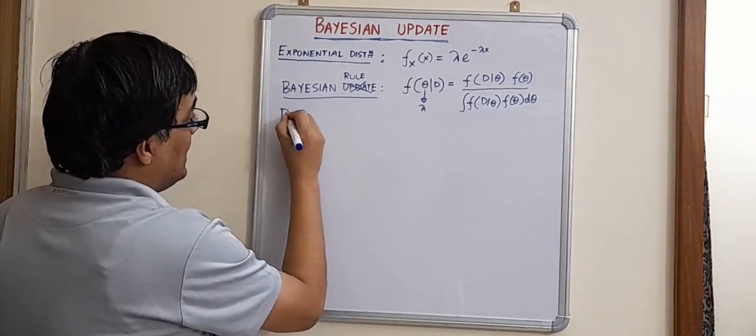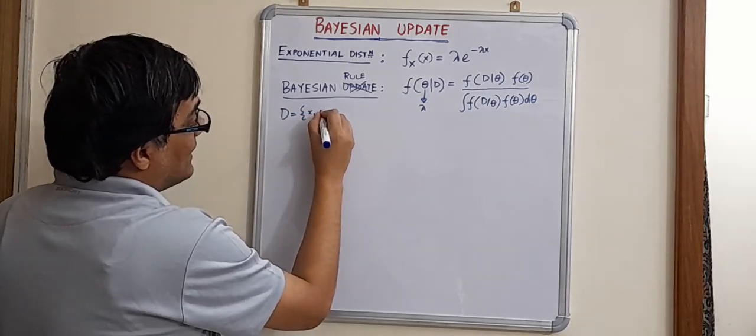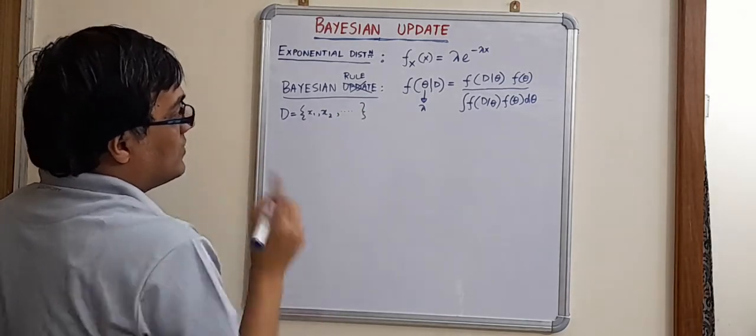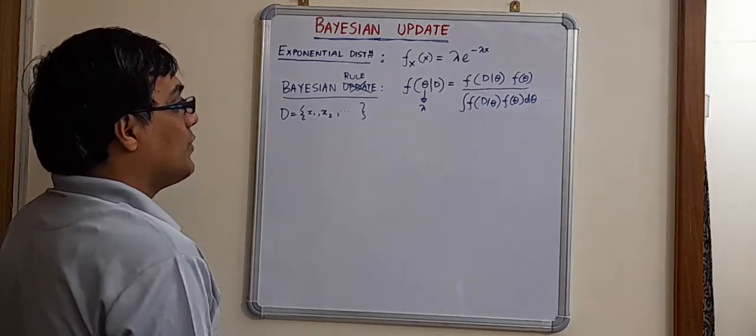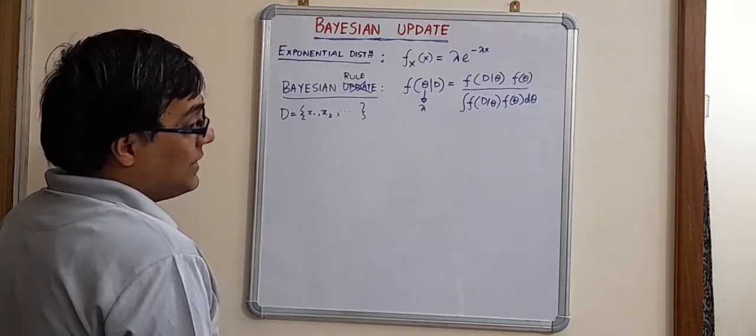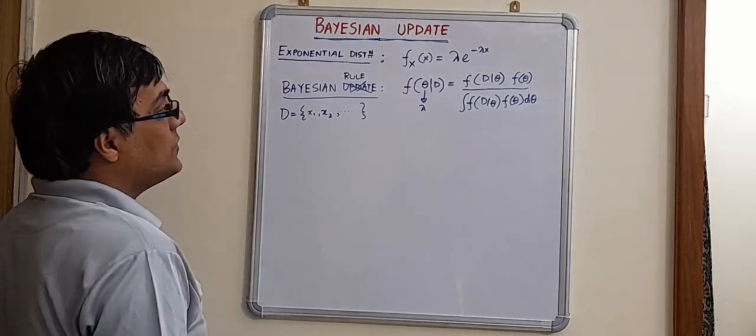D is basically the data, observed data, which could be x1, x2, as many as we possibly can and as many number of points that we can possibly get. But we have to remember that we are dealing with limited data. So it will not be a very exhaustive data set.